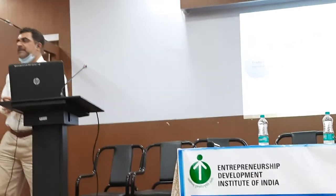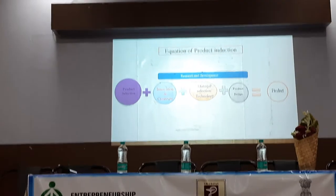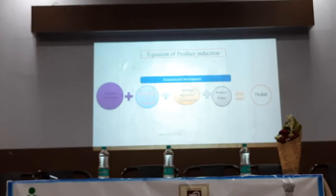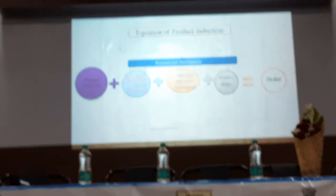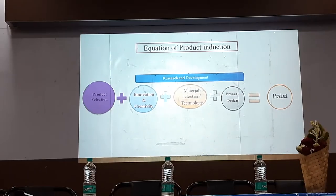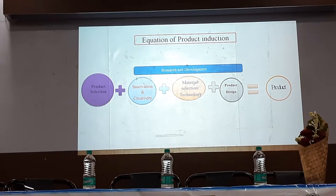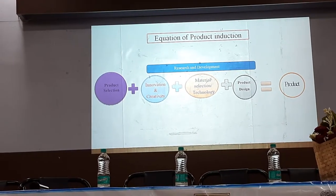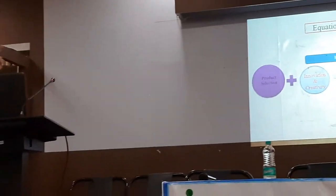Now this is the equation of product induction. If I want to come up with a good product in the market, these are some things I should consider. Number one is product selection. Number two is innovation and creativity. Number three is material selection, technology, and product design. When we talk about innovation, creativity, material selection, technology, and product design, all these are part and parcel of R&D.